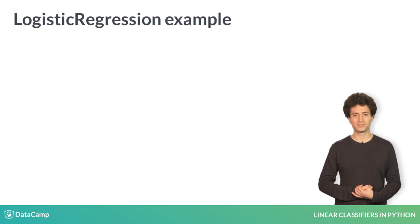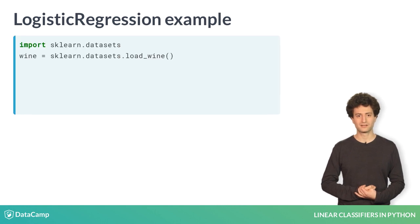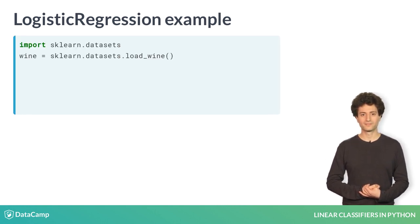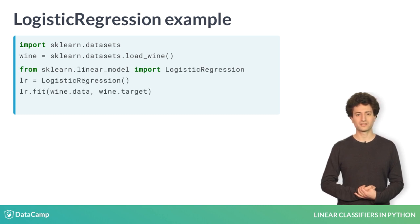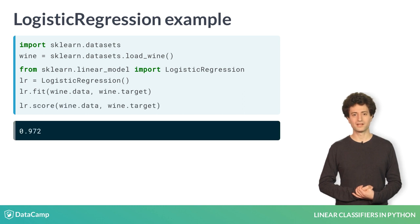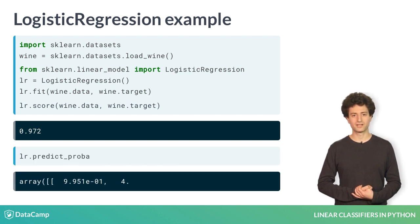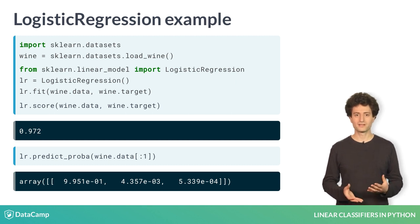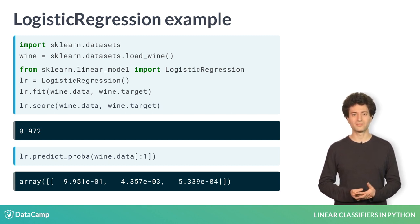Let's try this on an example dataset — in this case, the wine classification dataset built into scikit-learn. We load the dataset, then create and fit a Logistic Regression object. We compute the training accuracy and see it's about 97%. Scikit-learn's Logistic Regression can also output confidence scores rather than hard predictions. Let's do this with the predict_proba function and test it on the first training example. The classifier is reporting over 99% confidence for the first class and very low probabilities for the other two.